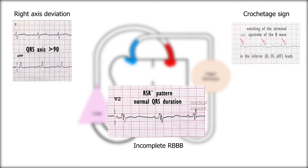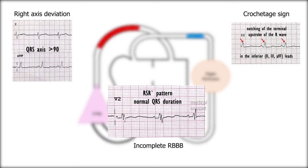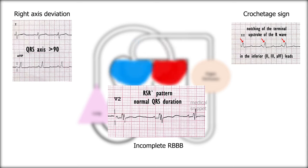Crochetage sign is notching of the terminal upstroke of the R wave, and it correlates with the size of the defect and implies a greater degree of shunting. It disappears after defect closure.